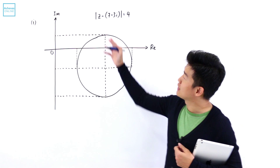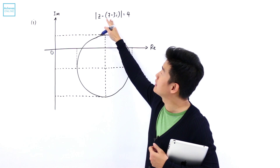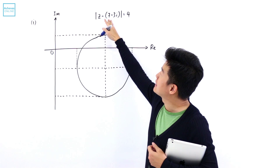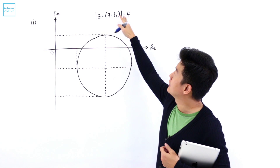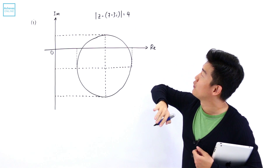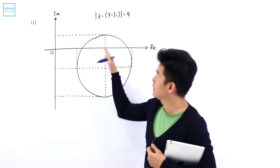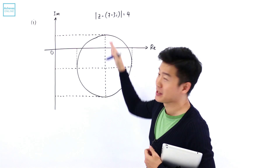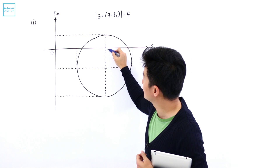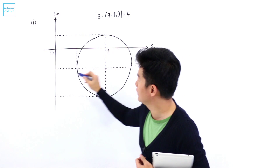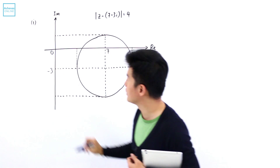The locus of z is a circle with center at 7 minus 3i and the radius is 4. The coordinates of this point are going to be 7 and minus 3.